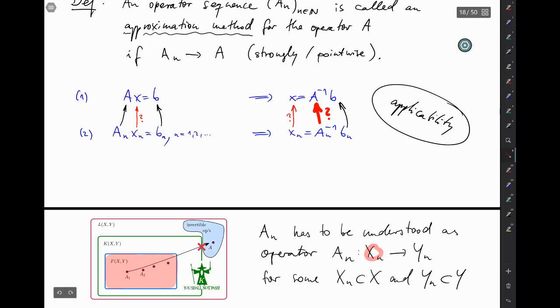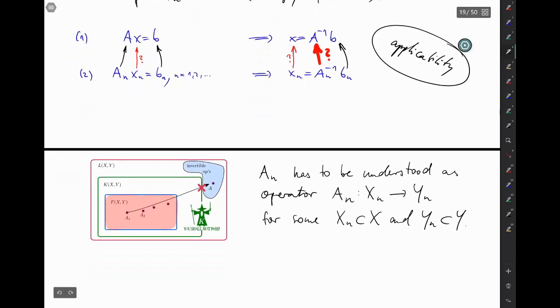but instead from some subspace X_N to some subspace Y_N. And if these spaces here are finite dimensional, then N of the same dimension, then A_N can be identified with a finite matrix and of course has a good chance to be invertible. So, okay, let's write that here again for completeness.